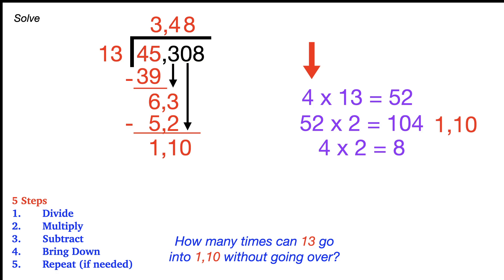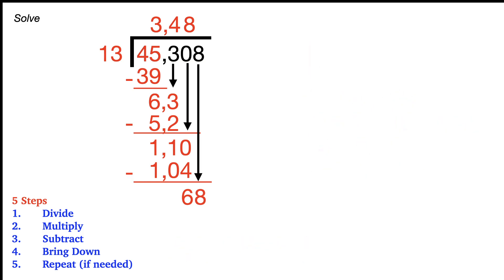And then 8 is going to go on the top. And now because I'm just estimating, I'm going to multiply 8 times 13, and I get 104, which is what we had up there near the 110. So 104, and then we subtract, and that would give us 6. And we're going to bring down that 8, and now we have 68.